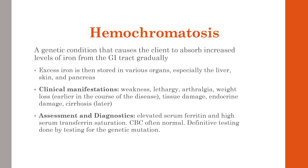Hemochromatosis is a genetic condition that causes the client to absorb increased levels of iron from the GI tract. Normally the GI tract absorbs about 1–2 milligrams of iron per day, but in hemochromatosis the rate is significantly increased. Excess iron is deposited into various organs, especially the liver, skin, and pancreas. Since tissue damage occurs gradually, clinical manifestations don't appear until about middle age — weakness, lethargy, arthralgia, weight loss, tissue and endocrine damage.